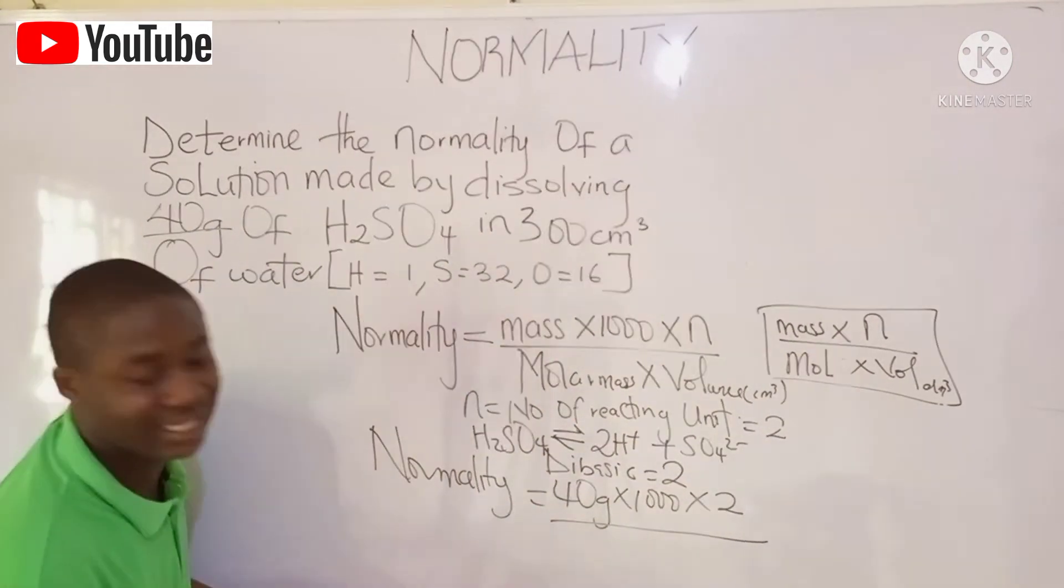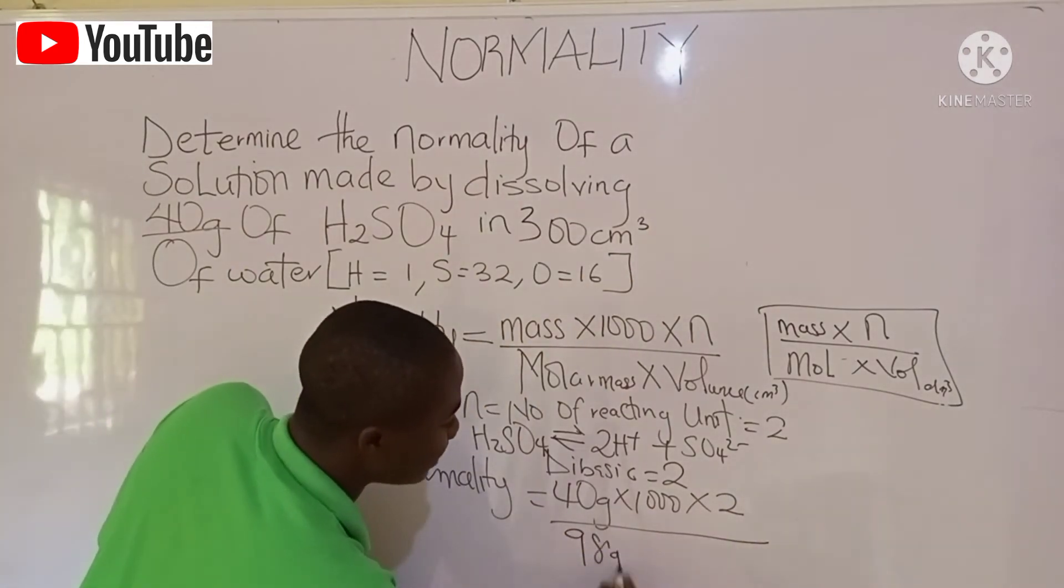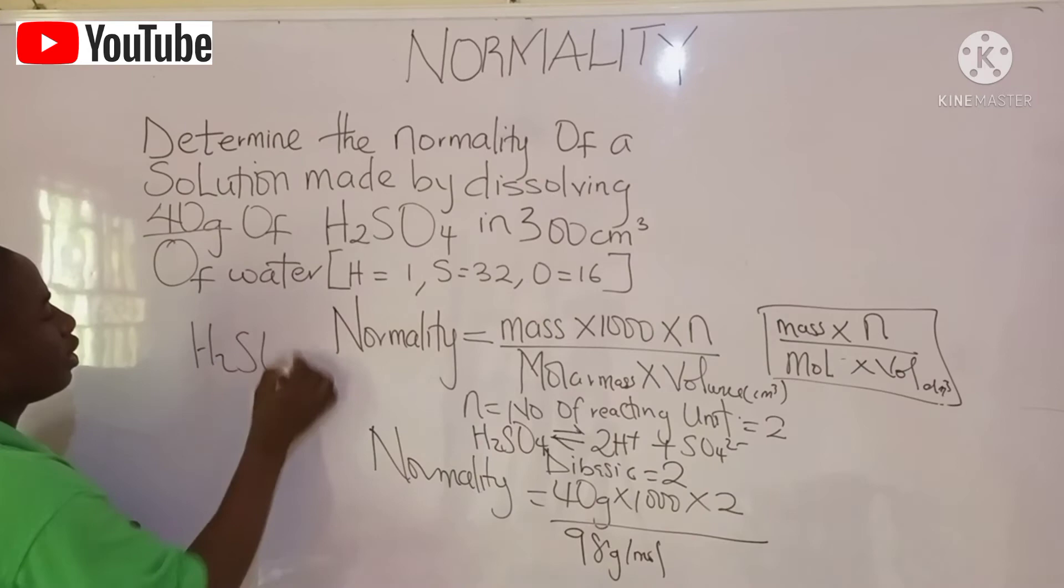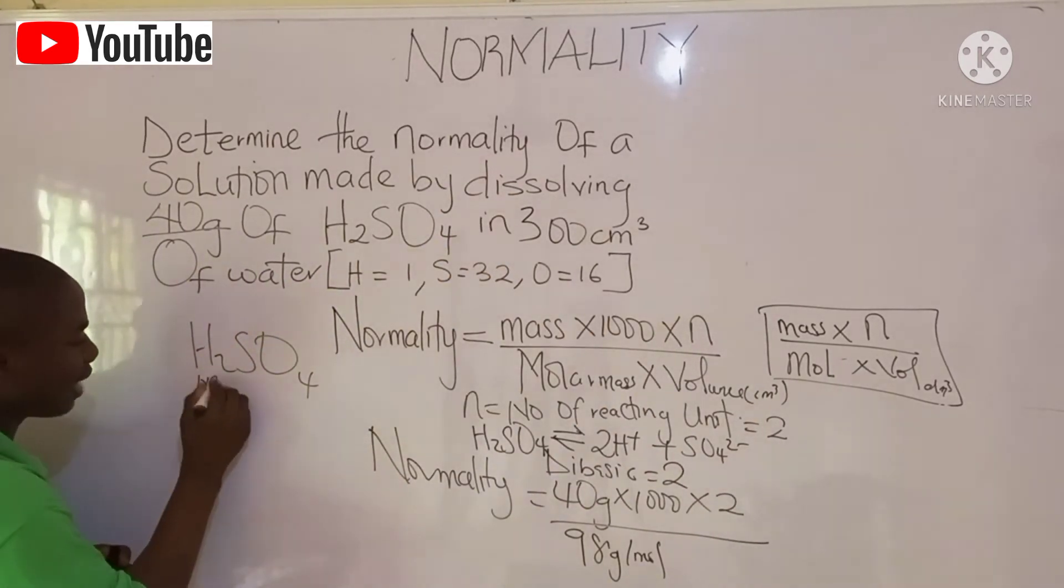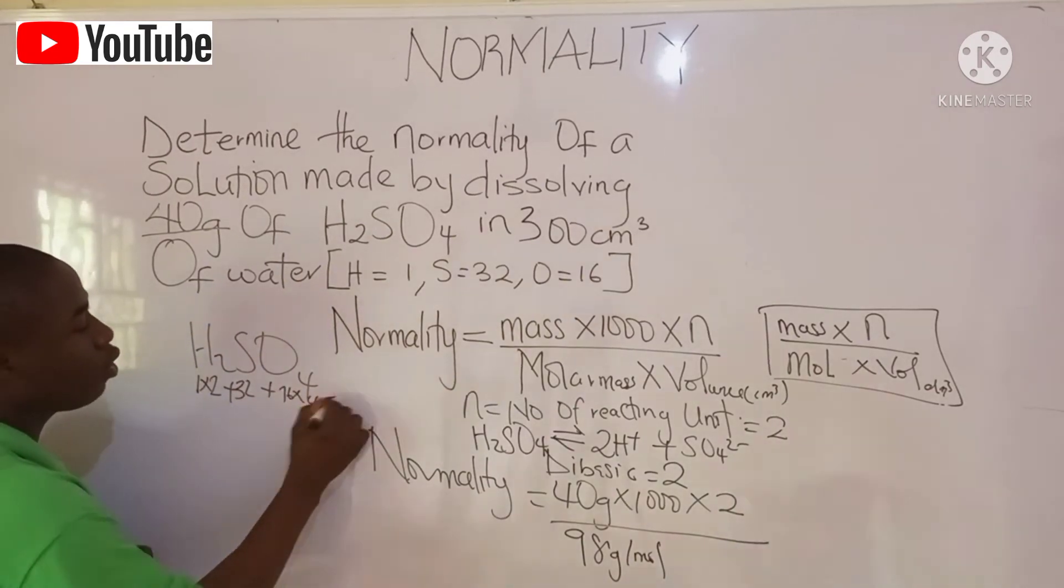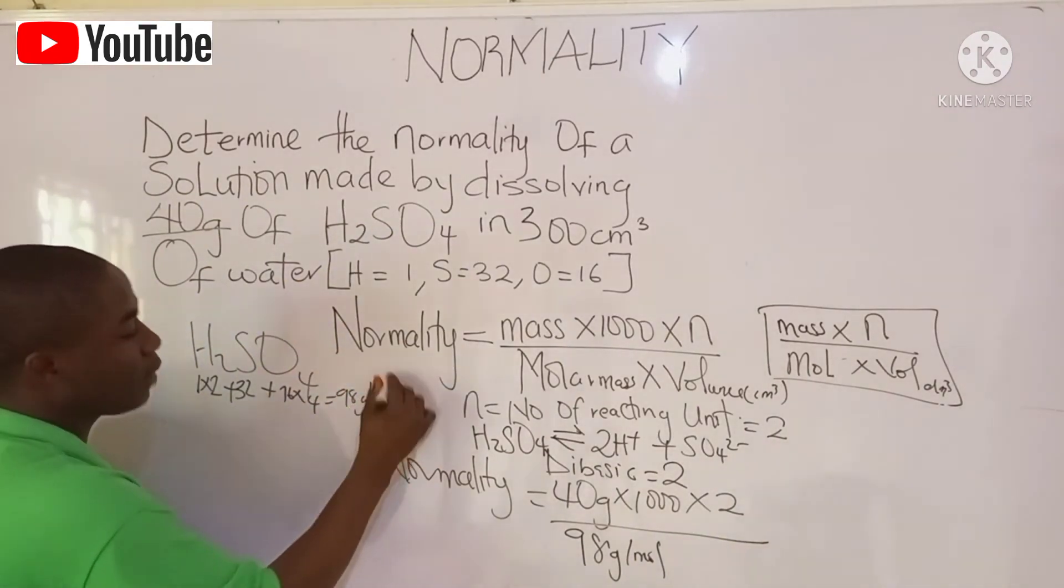This acid, popularly, it is 98 grams per mole. 98 grams per mole. H2SO4. This is H2SO4. 1, which is atomic mass of hydrogen, times 2 plus sulfur, 32 plus oxygen, 16 times 4, which is 98 grams per mole.